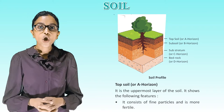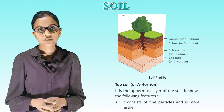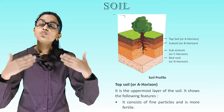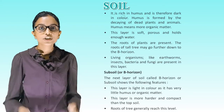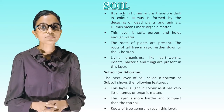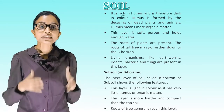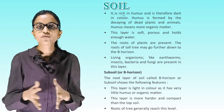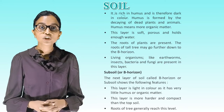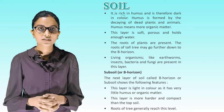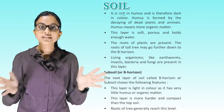Topsoil or A horizon: It is the uppermost layer of the soil. It consists of fine particles and is more fertile. It is rich in humus and is therefore dark in color. Humus is formed by the decaying of dead plants and animals. This layer is soft, porous and holds enough water. The roots of plants are present here; roots of tall trees may go further down to the B horizon. Living organisms like earthworms, insects, bacteria and fungi are present in this layer.